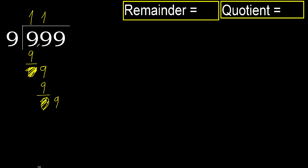9. 9 multiplied by 1 is 9. Okay, subtract. Next.